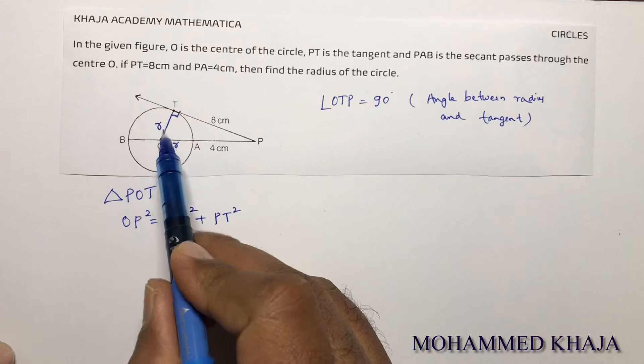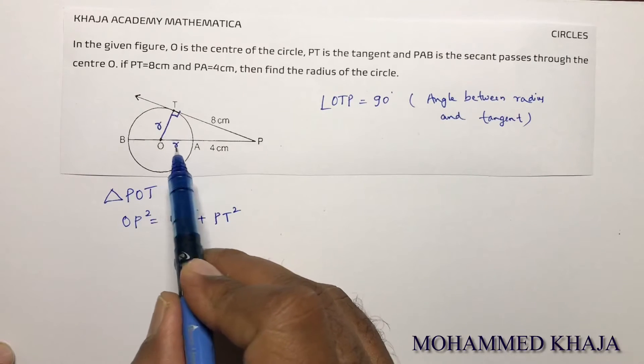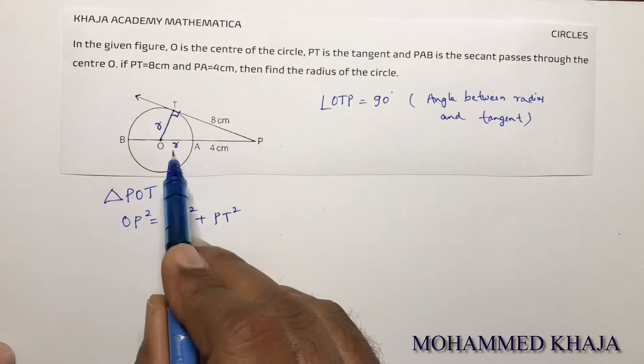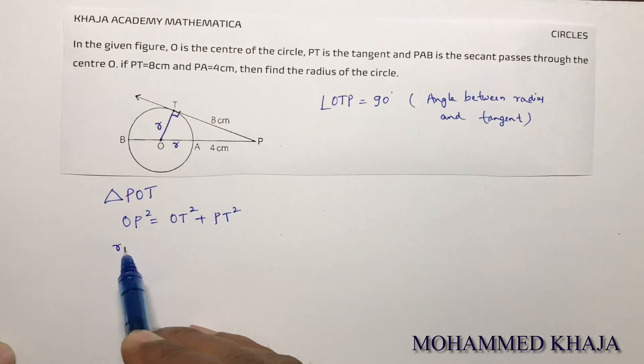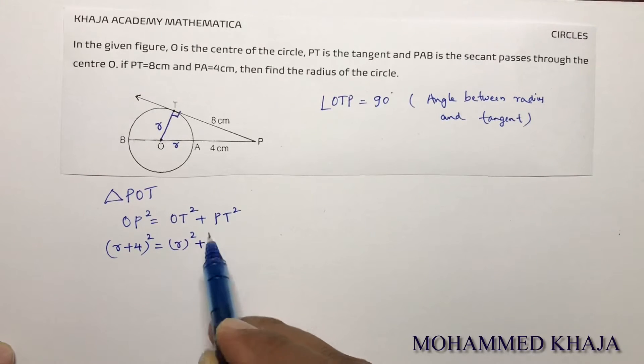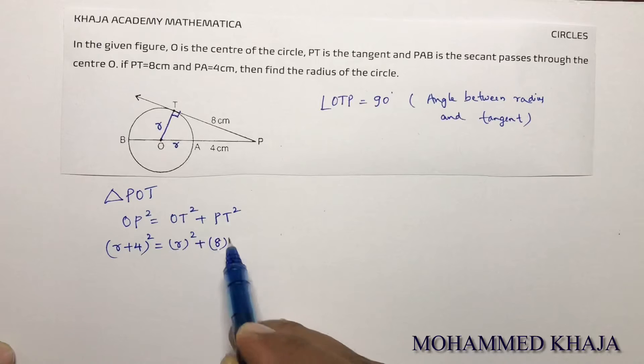As OT and OA are radius, I consider them as R. So OP total length becomes R plus 4. That's (R + 4)² = R² + 8².